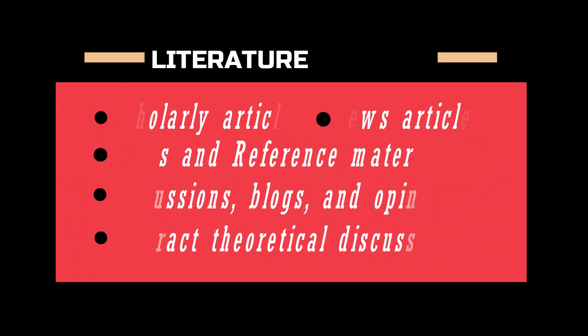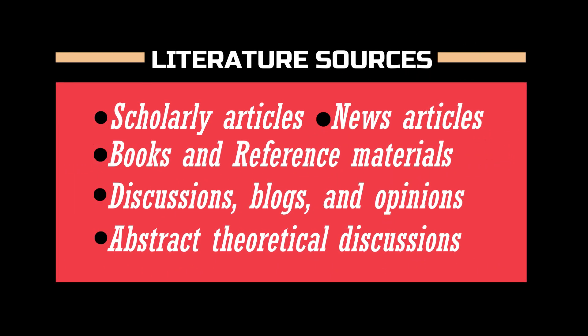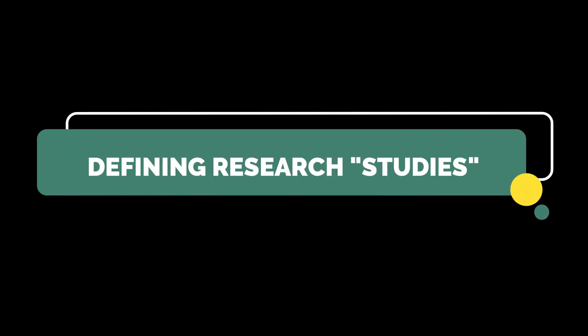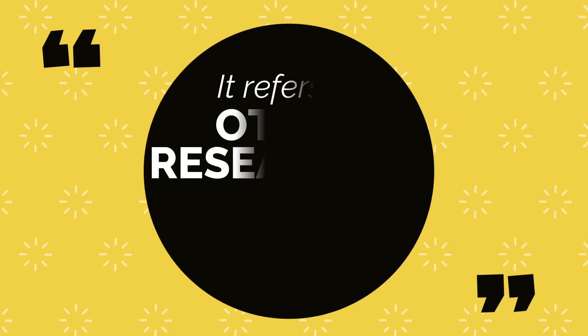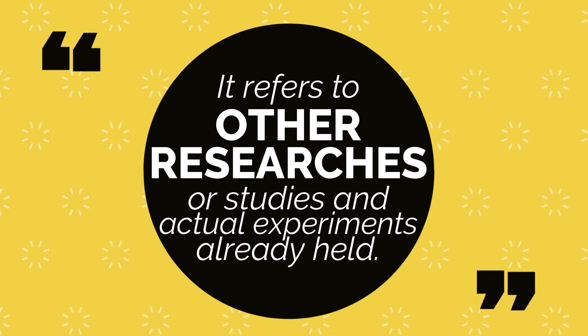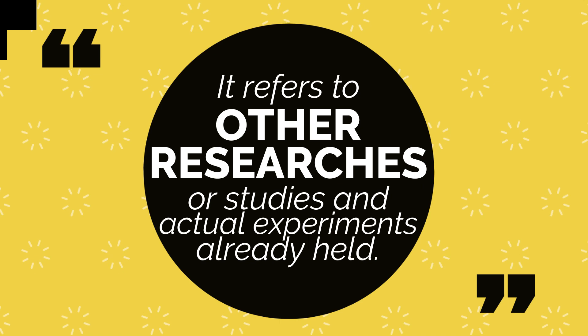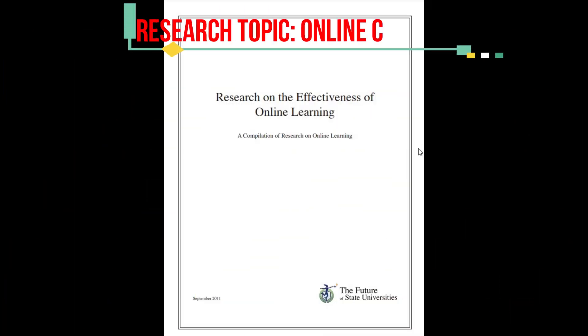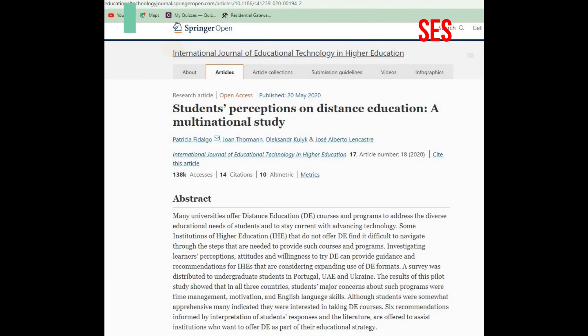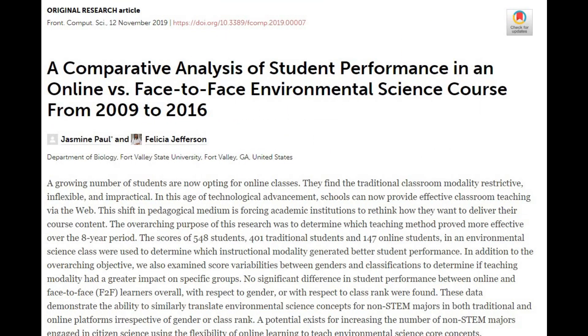Here are some examples of literature sources you may use in collecting your needed data. Another source of data for chapter 2 is the studies. On the other hand, research studies refers to the other researches or studies and actual experiments conducted relevant to your research topic. Considering the previous example, if your research topic is about online classes in the new normal, the previously conducted researches about it are what you are going to look for to get the significant data you need.